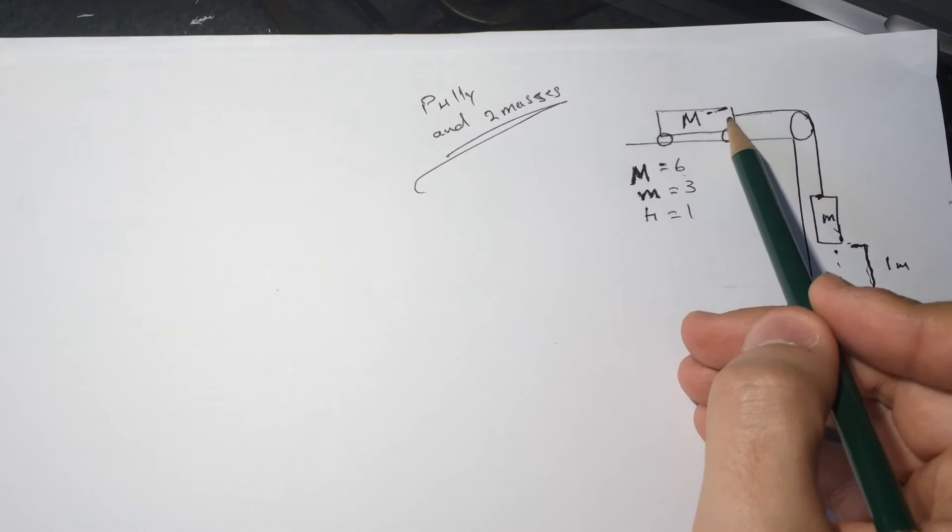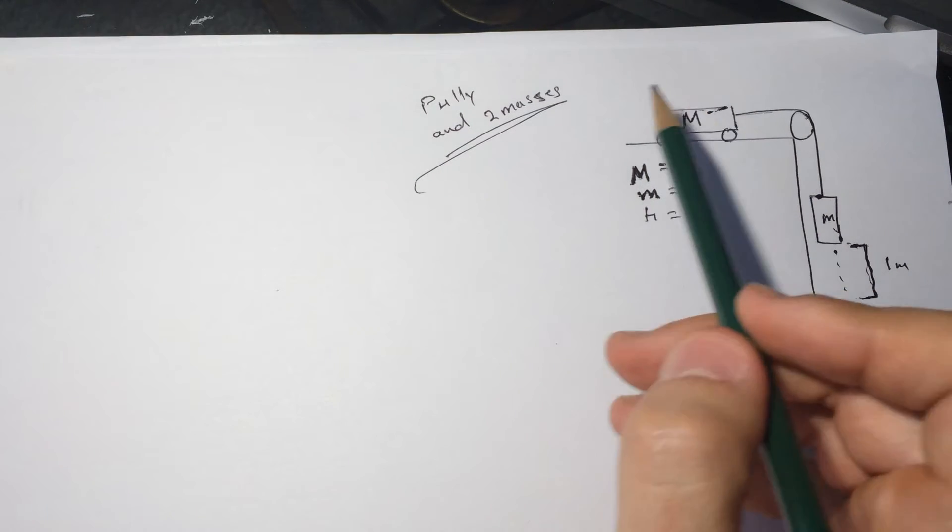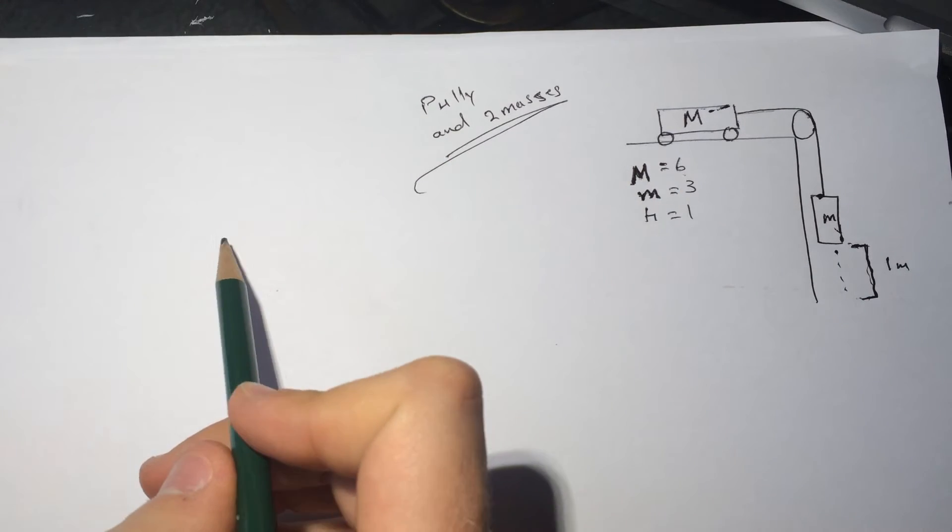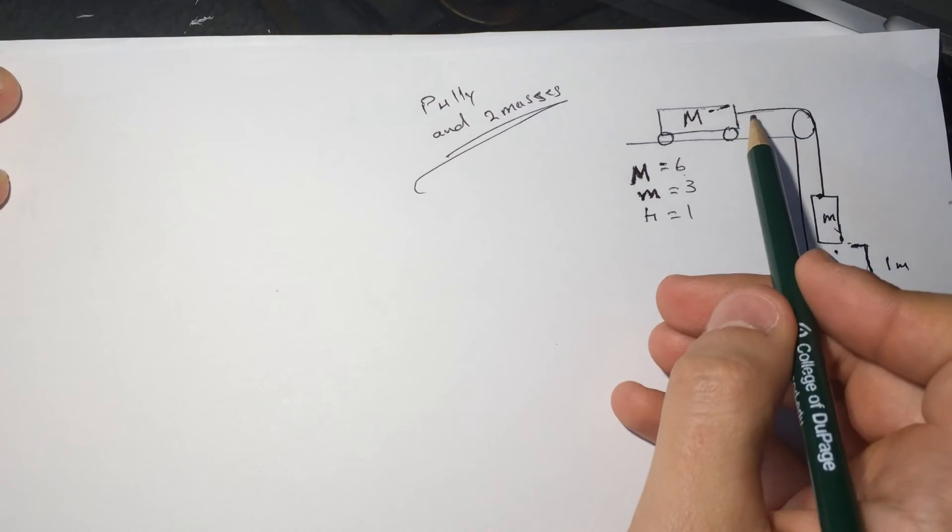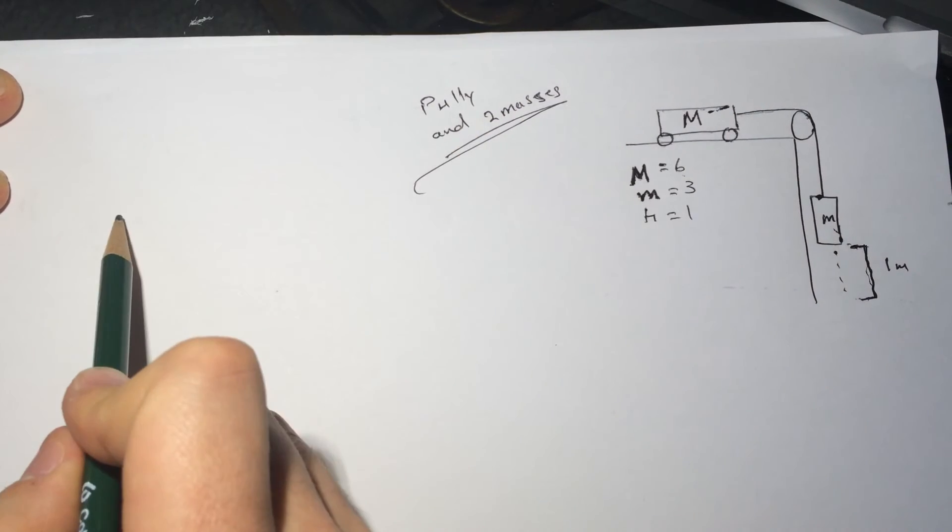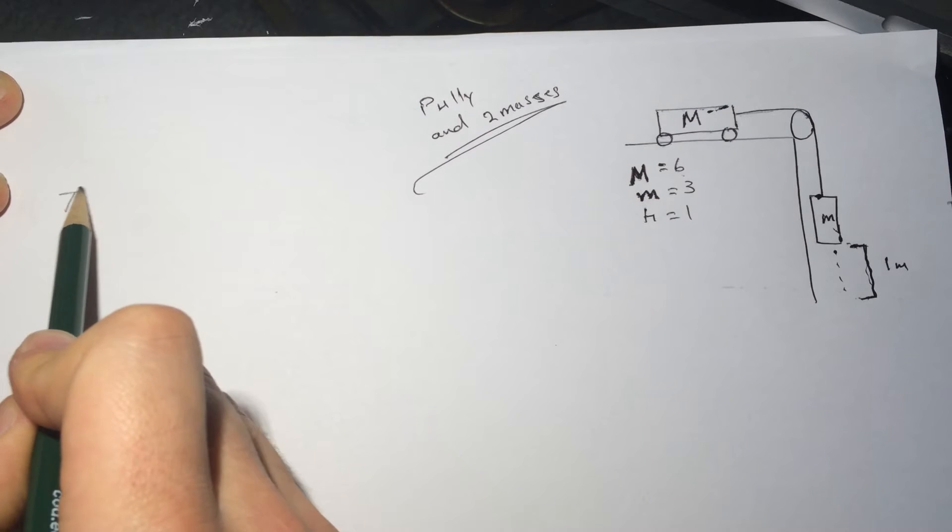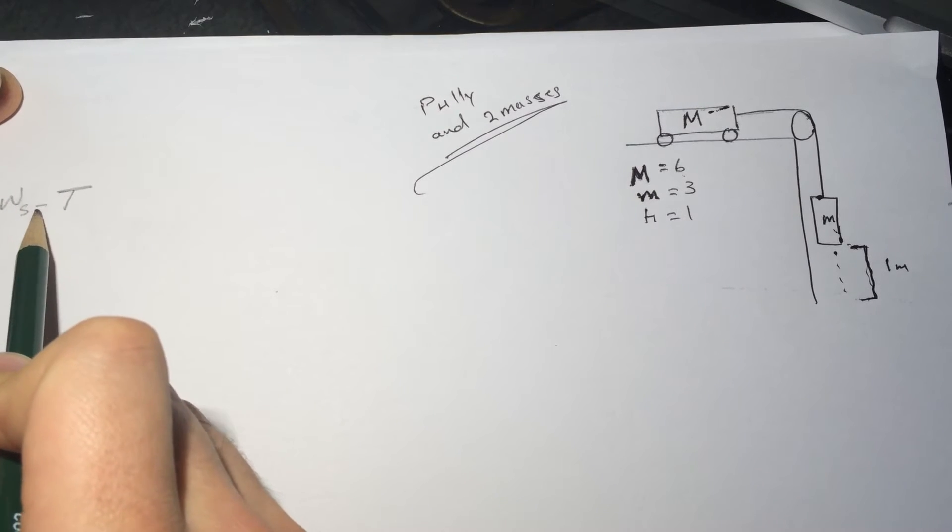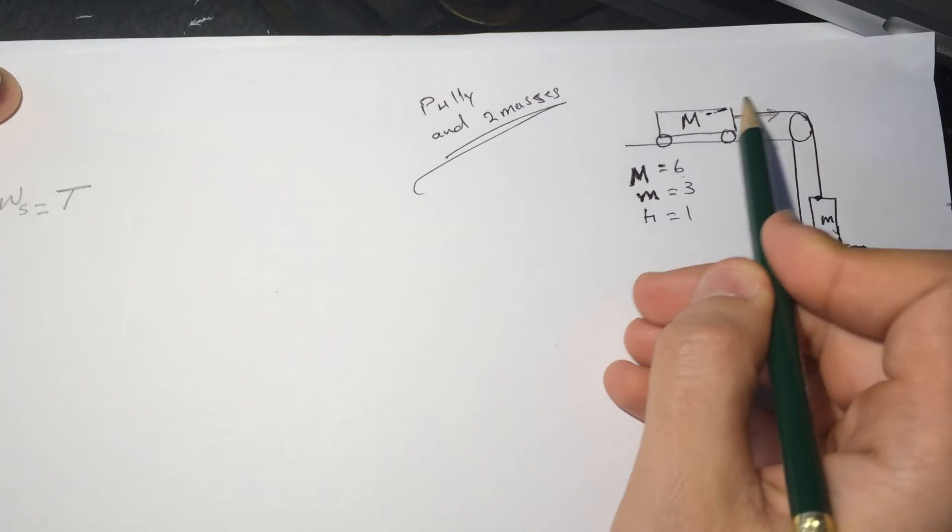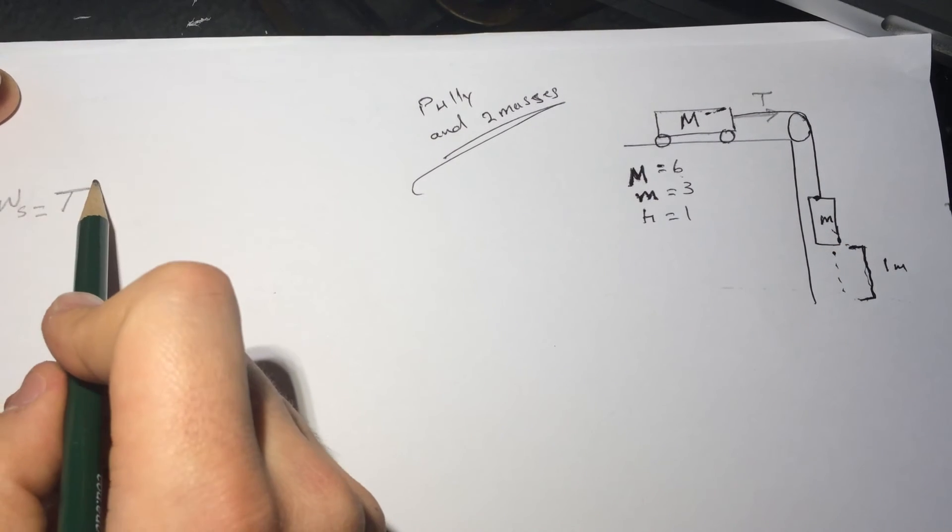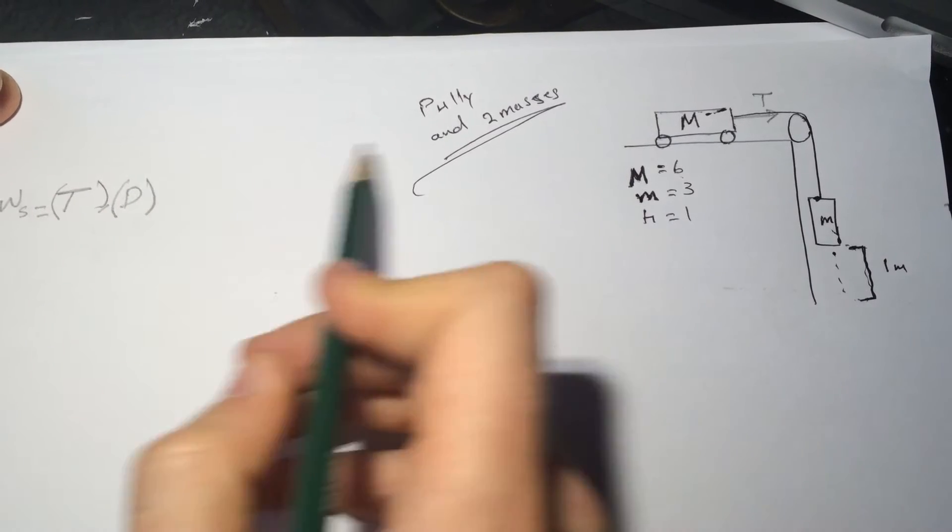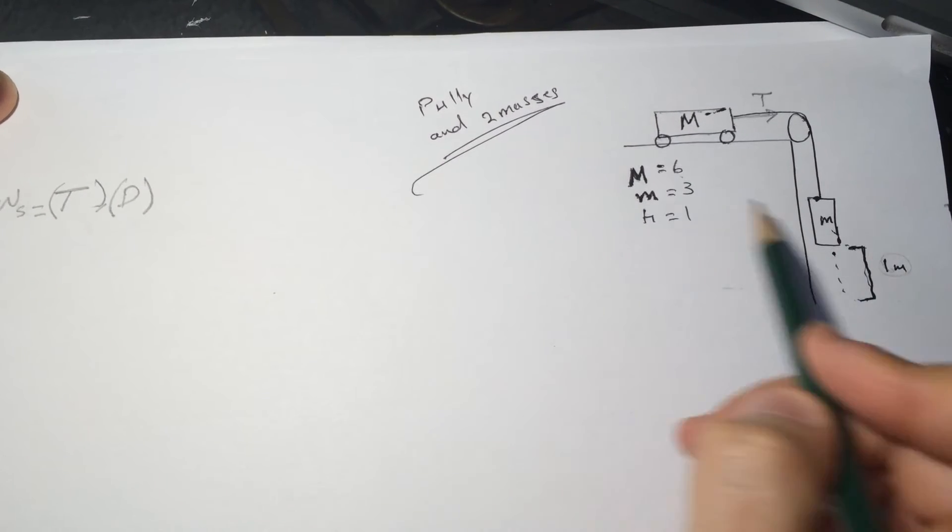They're asking what is the work done on the cart by the string. So they want to work done by the string on the card. The work done by the string on the cart is W_s equals T times D, which is the tension times the distance that they gave us, which is one.